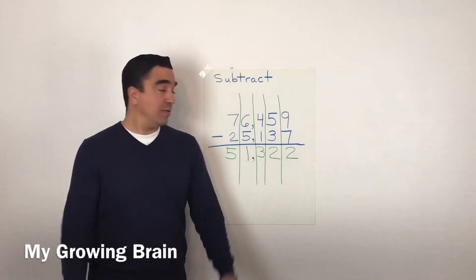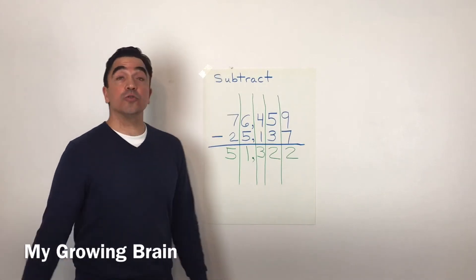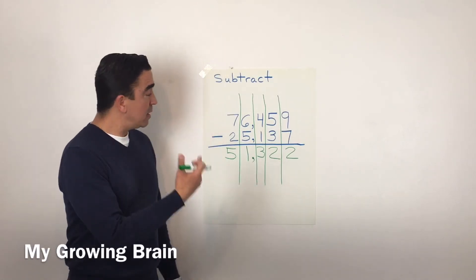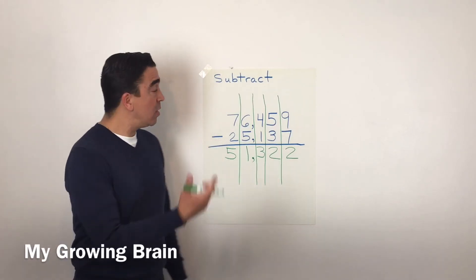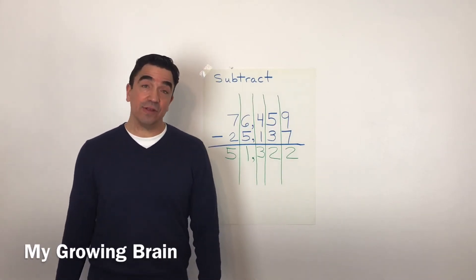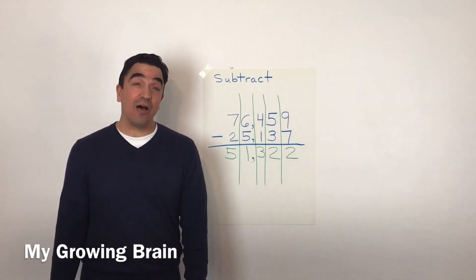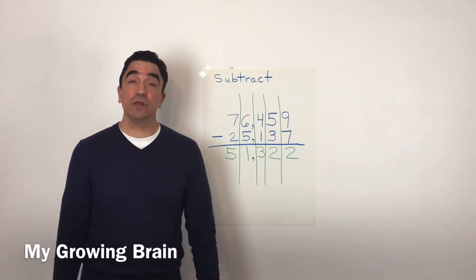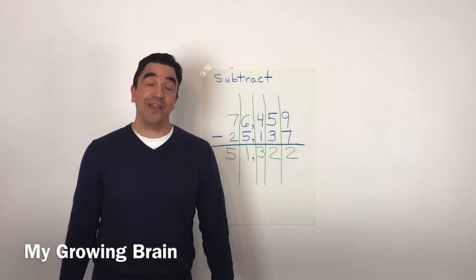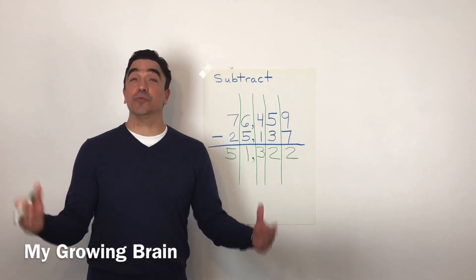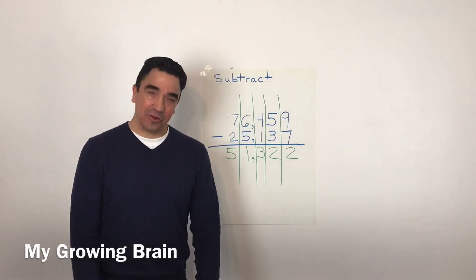So, 76,459 minus 25,137 gives us a difference of 51,322. And don't forget, the difference is the answer to a subtraction problem. And that concludes our lesson.